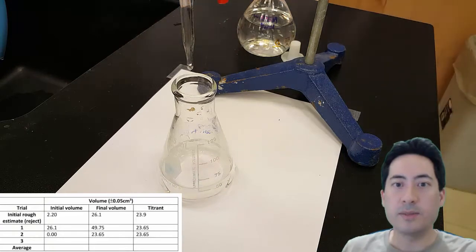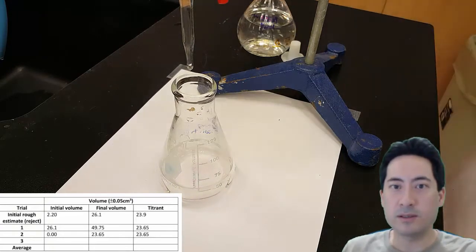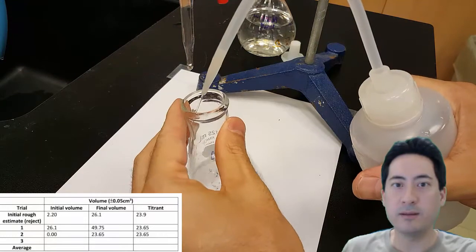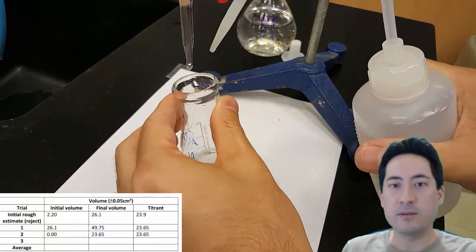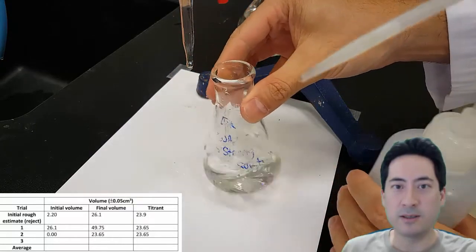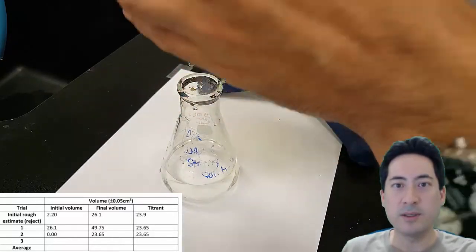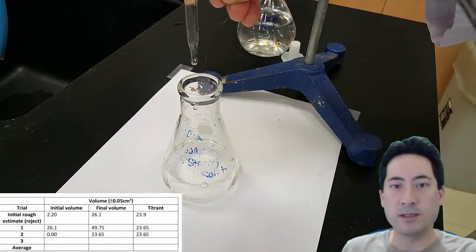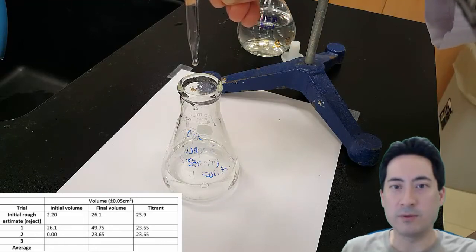And what I'm doing here is I'm getting the water bottle and I'm rinsing the sides of the conical flask and the tip of the burette. That's to make sure I get every single particle. So if there's been any splashes on the sides or any attachment of the drop to the tip, I can wash that all together right down into the solution to make sure they're fully mixed.